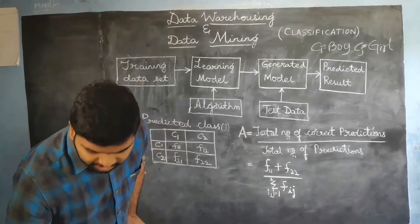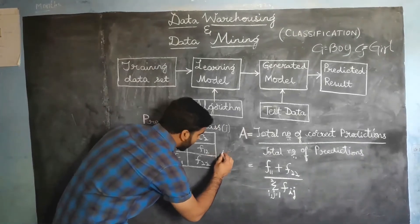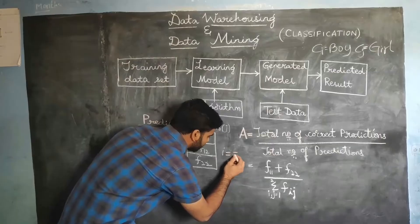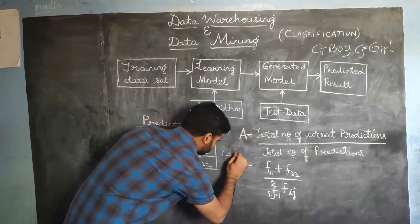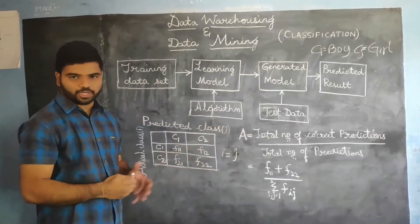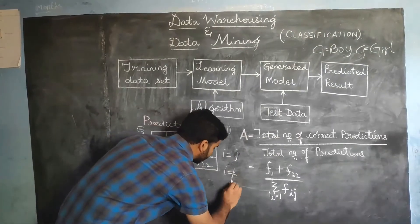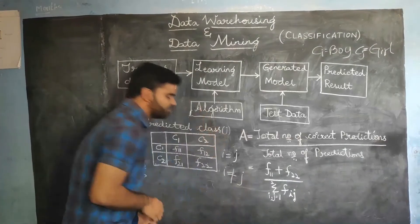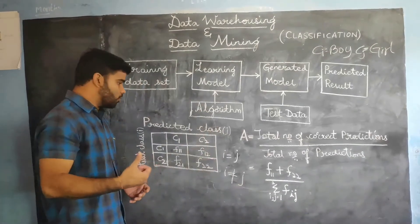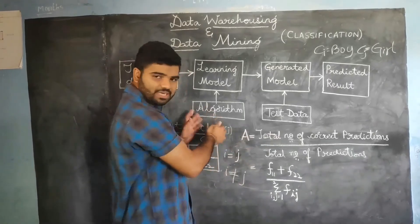To summarize for easy remembrance: whenever I equals J, it is known as a correct prediction. Whenever I does not equal J, it is a wrong prediction. Now we are going to measure the accuracy and error of this classification.